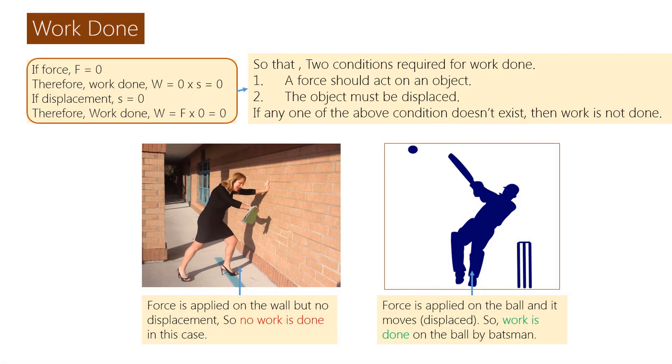Work done. If force F equals zero, therefore work done W equals zero times S equals zero. If displacement S equals zero, therefore work done W equals F times zero equals zero. So that two conditions required for work done: 1. A force should act on an object. 2. The object must be displaced. If any one of the above conditions doesn't exist, then work is not done.